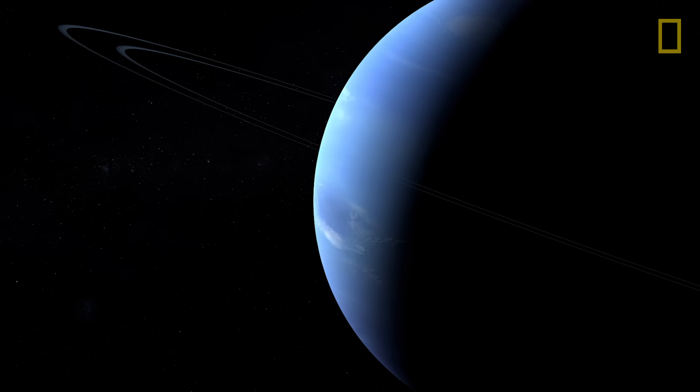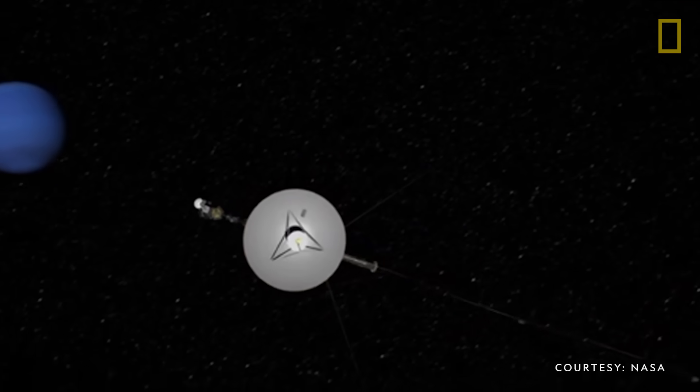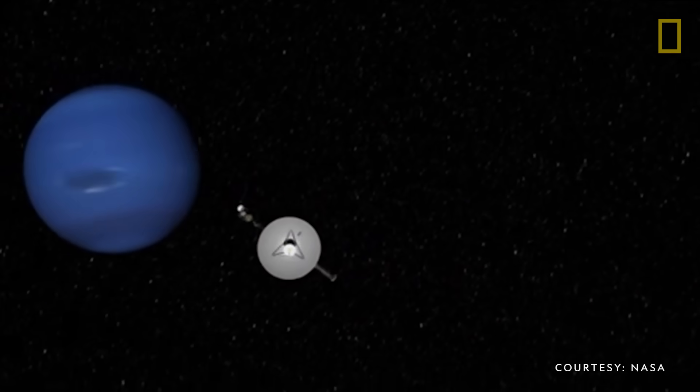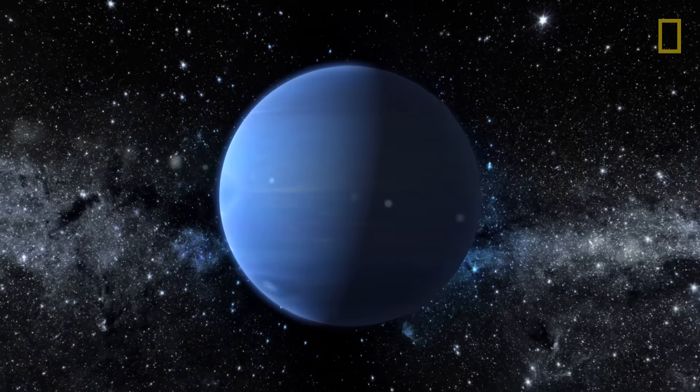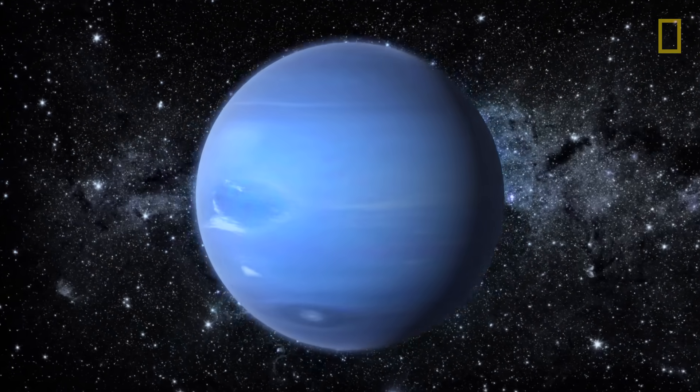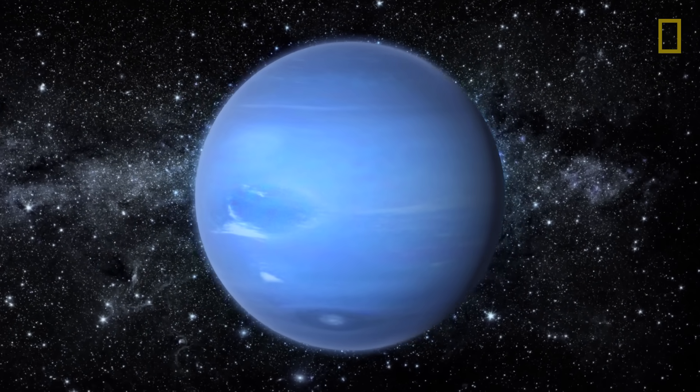Much is left to be discovered about Neptune, its rings, and its moons. Only one spacecraft, Voyager 2, has visited these cosmic bodies. But future missions to this mysterious icy world would have even more stories to tell.